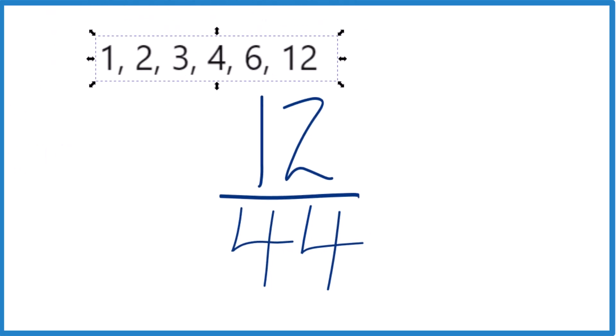So for 12, we have 1 times 12, that's 12, 2 times 6 is 12, 3 times 4, that's 12.